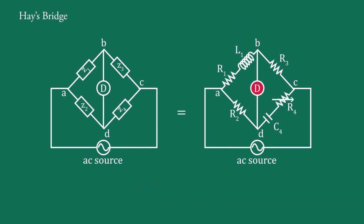The detector D is generally either a pair of headphones or a null detector, and there is an AC source. This bridge is used to measure self-inductance L1 in terms of C4 and R4. Comparing the two bridges, we find that z1 equals R1 plus j·omega·L1, z2 equals R2, z3 equals R3, and z4 equals R4 plus 1 upon j·omega·C4.